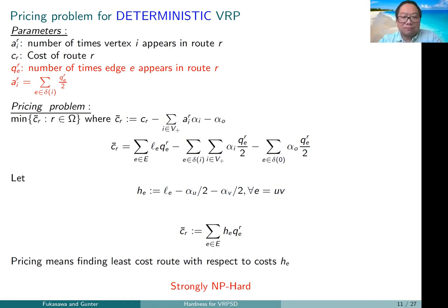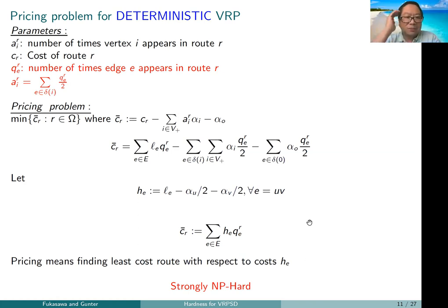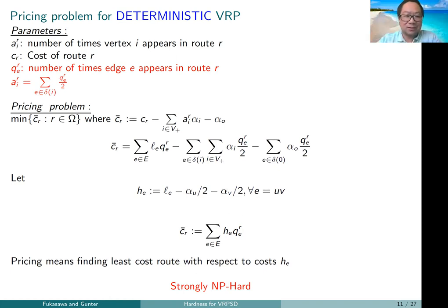The problem is that solving this pricing problem is strongly NP-hard. This means that even solving the LP relaxation is strongly NP-hard — we've just exchanged one strongly NP-hard problem for another equally hard problem. It didn't help much.